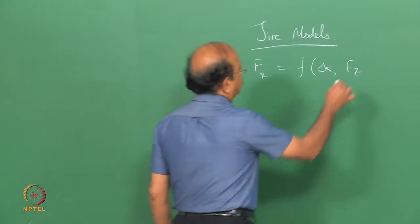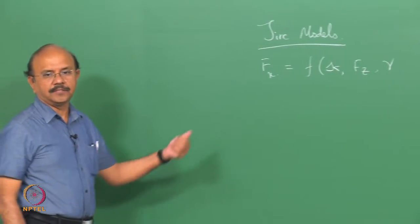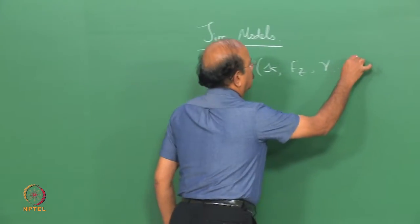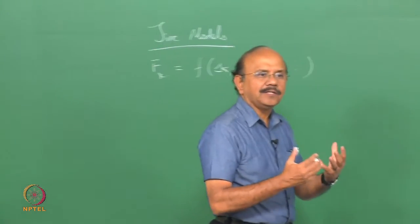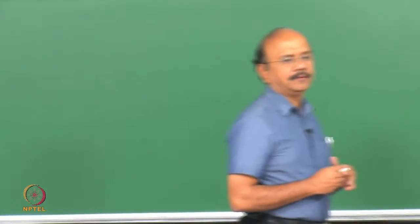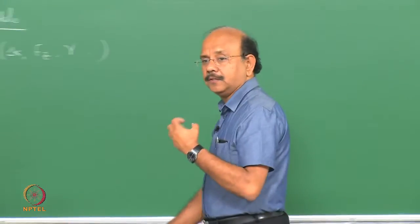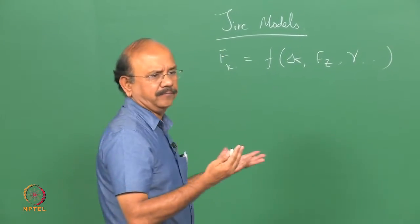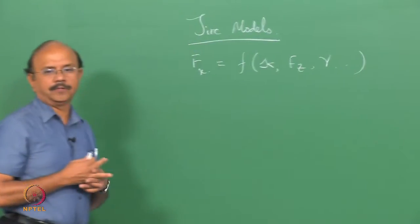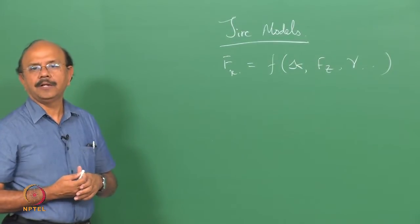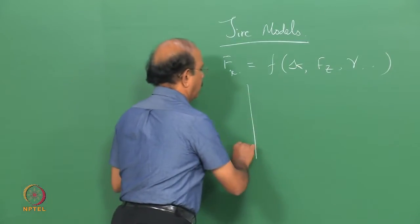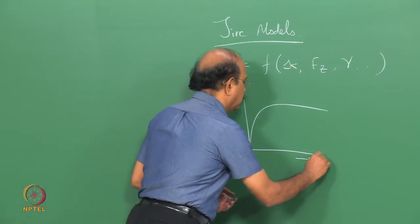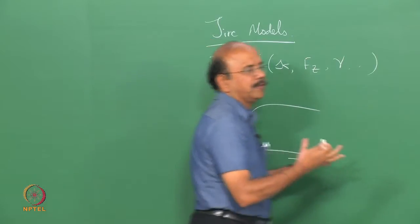Camber angle, if it has an effect — for example, in Fy it has an effect. So if it is Fy, camber angle will have an effect and so on. In other words, this tire model is nothing but a mathematical equation. There are a number of ways in which these mathematical equations are arrived at. The easiest is to do a curve fitting, which we would call as empirical equations. For example, I can determine these curves using experiments — it can be kappa versus Fx — and then fit an equation to this curve.